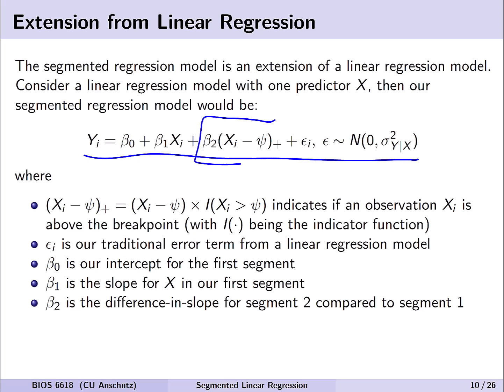The one unusual part is the x_i minus psi subscript plus term. We define that as x_i minus psi, the breakpoint location, times an indicator determining if x_i is greater than the breakpoint — essentially asking if there's a change in the regression model after the breakpoint psi. Beta 2 is the difference in slope for the second segment compared to the first. The other terms — epsilon i, beta naught, and beta 1 — reflect traditional assumptions: epsilon is the normally distributed error with mean zero and homoscedastic variance sigma squared; beta naught is the intercept for the first segment; and beta 1 is the slope for x in the first segment.